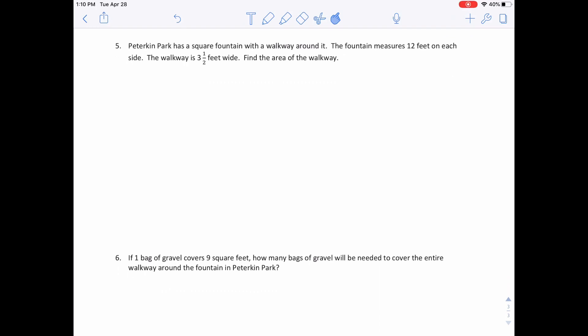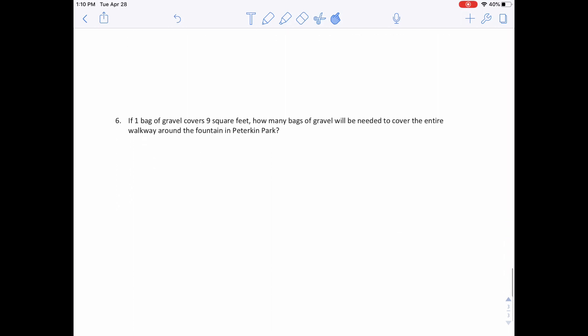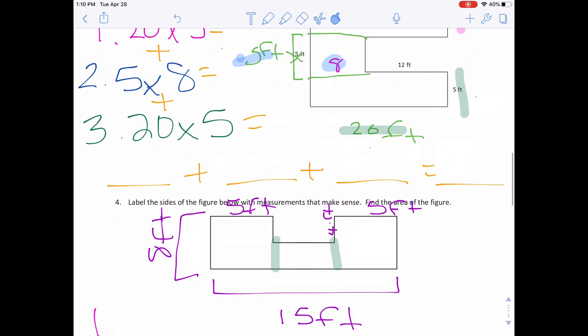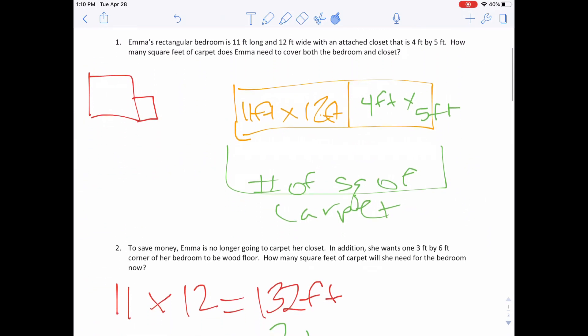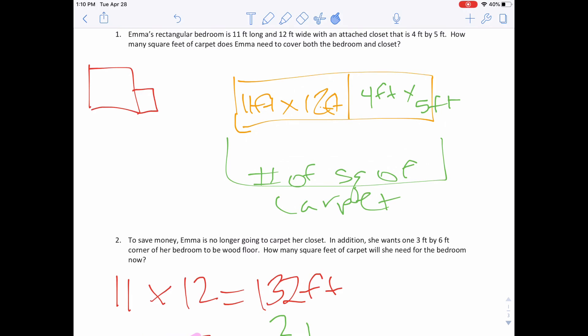Number 5 says Perkins Park has a square fountain with a walkway around it. The fountain measures 12 feet on each side. The walkway is 3 and 1 half feet wide. Find the area of the walkway. Number 6, if one bag of gravel covers 9 square feet, how many bags of gravel will be needed to cover the entire walkway around the fountain? I want to remind you that the biggest thing with this is to break it into manageable chunks. Remember, at first we found Emma's rectangular bedroom is 11 feet by 12 feet before we started it on the attached closet. Once you figure out what you need to do and you break into manageable chunks, it makes it a lot easier. Just like always, if you have any questions or concerns, please let your homeroom teacher know. I hope you have a lovely day.